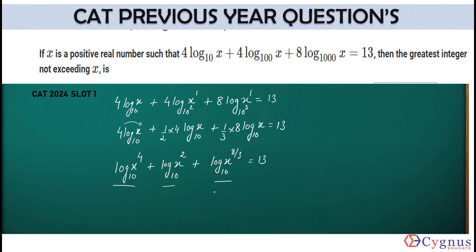Now, look at all the three terms. Their bases are same. So, I can add them. So, what do you get here? Log of x to the power 4 into x to the power 2 into x to the power 8 by 3 to the base 10 is equal to how much? 13.